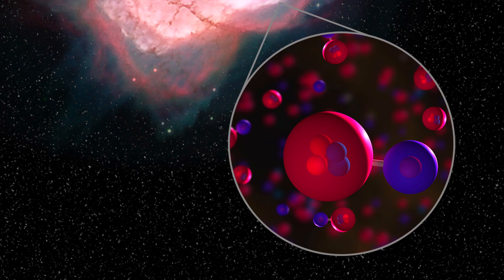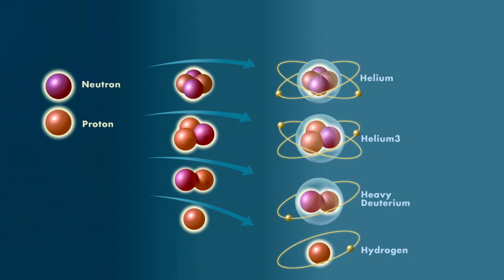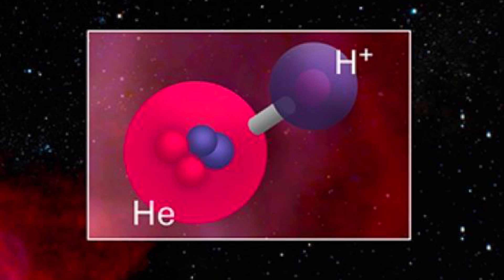The Big Bang Theory also predicts that the universe should have a uniform distribution of light elements, such as hydrogen and helium, and this prediction has also been confirmed through observations. These light elements were created in the first few minutes after the initial expansion, when the universe was still too hot and dense for heavier elements to form.